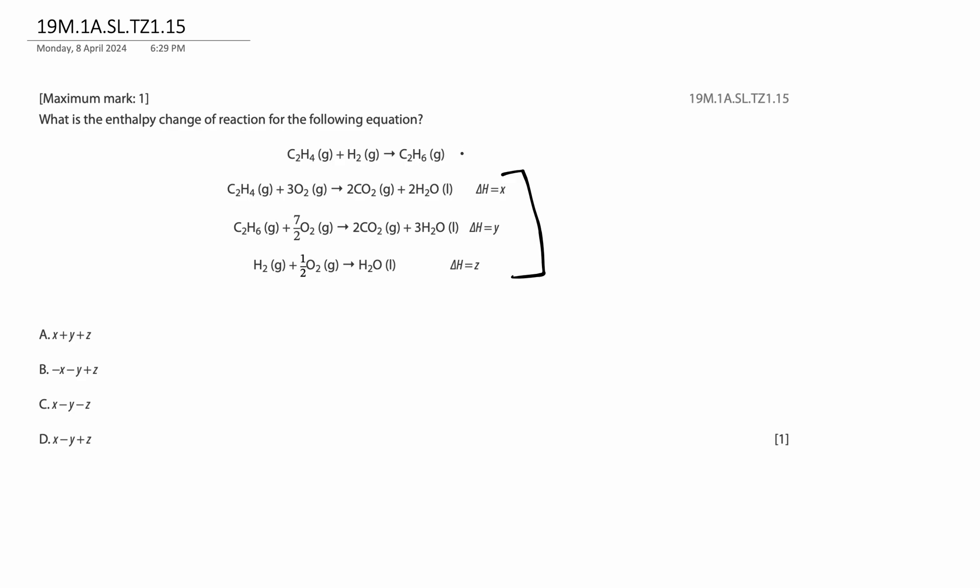So, to solve this question, we need to use Hess's law. More specifically, the algebraic method to solve Hess's law. But we don't actually need to go too far in this question. We just need to understand the way to arrange these following three equations so that we can get all the reactants on the correct side and the products on the correct side. Let's see.